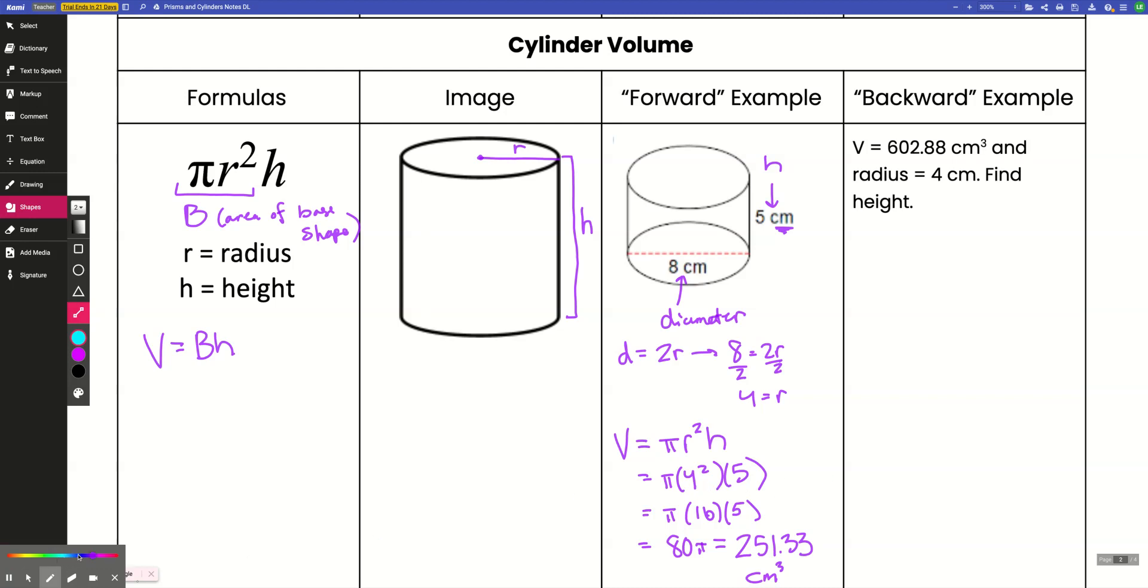Okay, then last up here, let's take a look at a working backwards example. So this time they gave me the volume and the radius, and I have to find the height. So I'm still using the same formula. Volume equals pi r squared h. You're just plugging stuff into different places. So rather than plugging in something for r and h, I'm going to plug in volume, and I'm going to plug in radius. So my volume was 602.88 equals pi, and then my radius is 4, so 4 squared, and then I'm going to leave h as a variable because I don't know what it is.